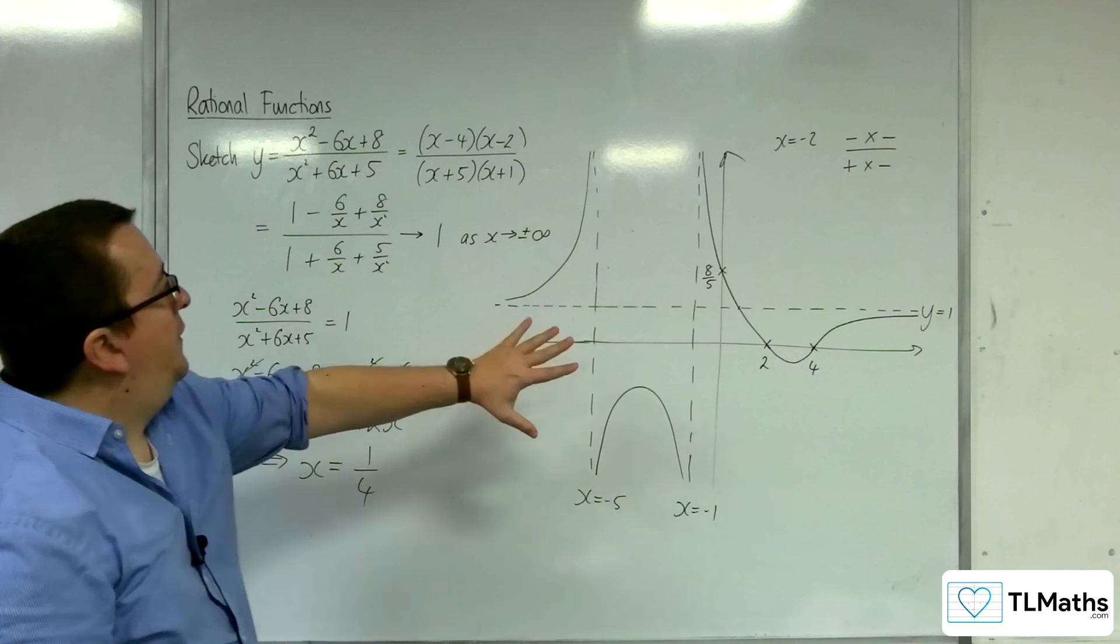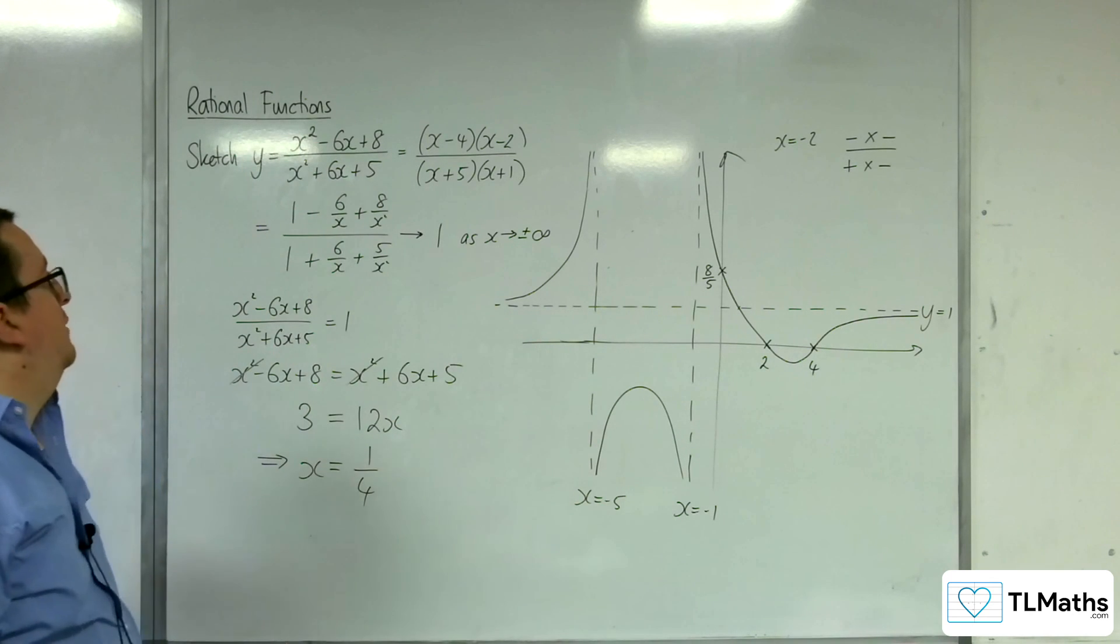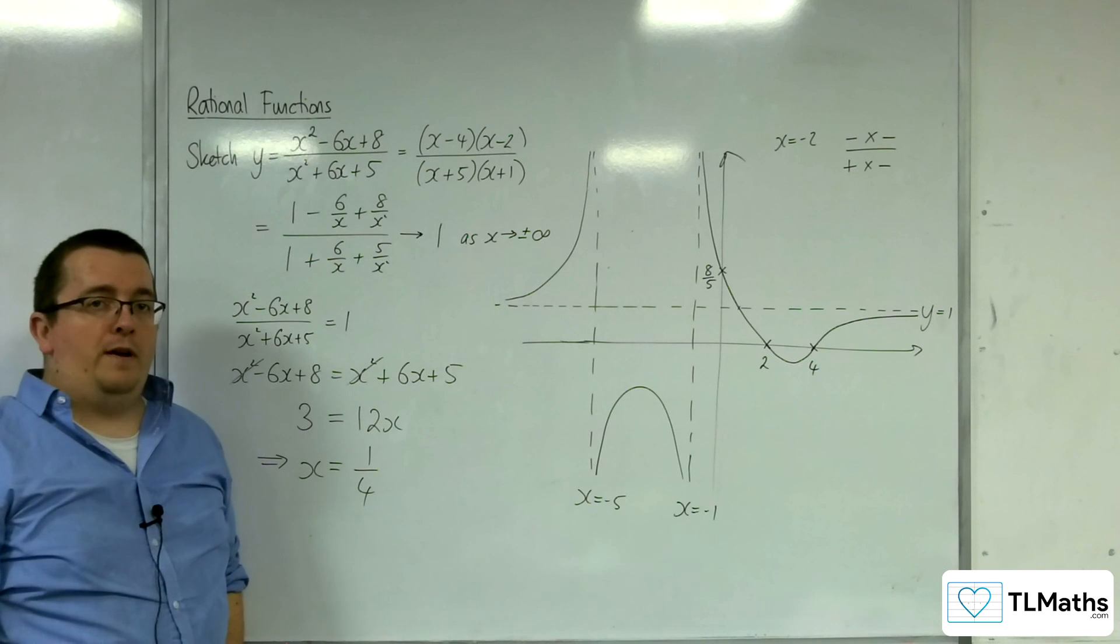And so this is the sketch of y equals x squared take away 6x plus 8 over x squared plus 6x plus 5.